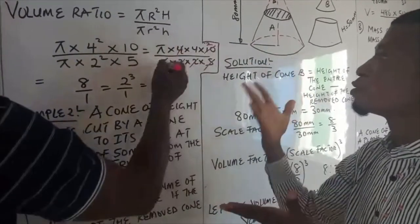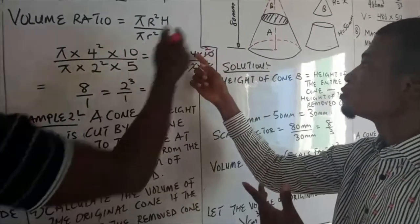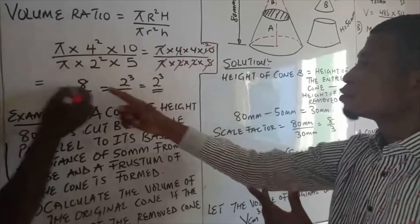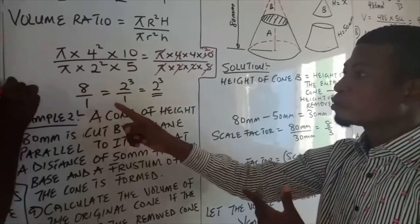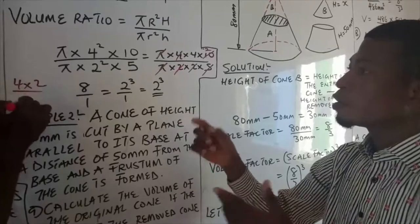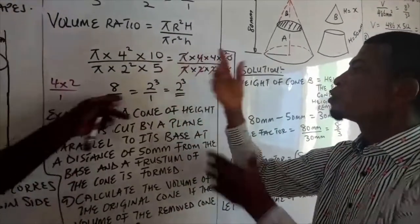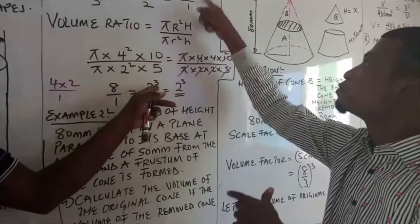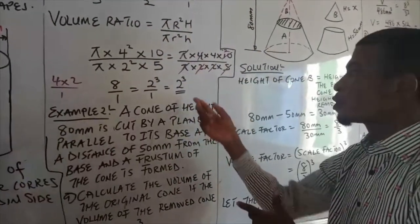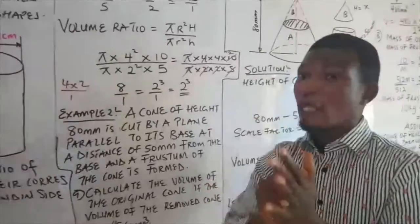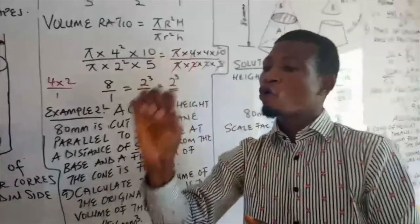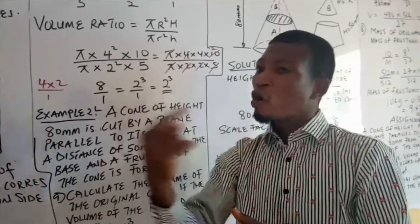This 2 here cancels this 2, then I have 5 cancel this 2, π cancel π. This will now be 4×2 which gives us 8, so 4×4×2 over 1 gives us 8, which is 2³ over 1.